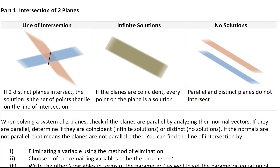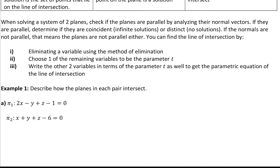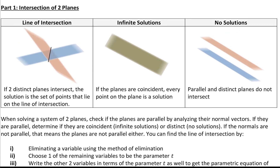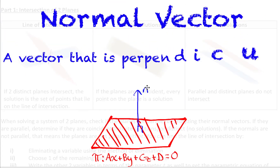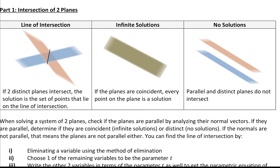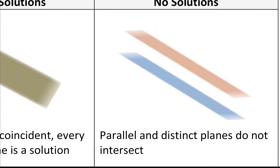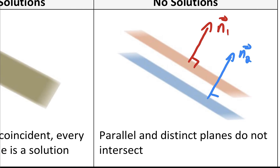How are we going to know if the planes are parallel? We have to remember what a normal vector is — a vector that is perpendicular to the entire surface of a plane. If I draw normal vectors to the parallel and distinct planes, notice that because the planes are parallel, their normals are also going to be parallel. So we look at the normal vectors and notice: are those normal vectors parallel or not? If they are parallel, that tells us the planes are parallel.